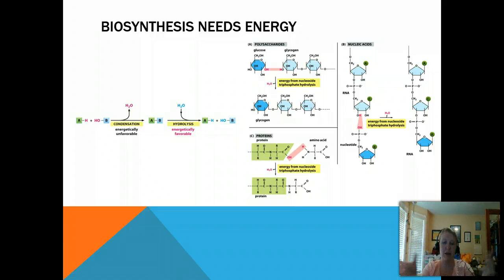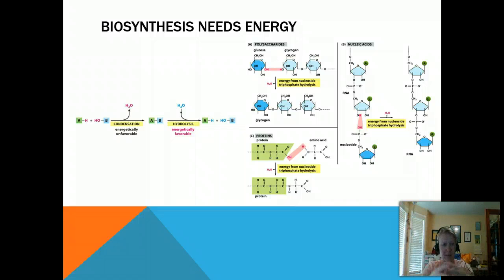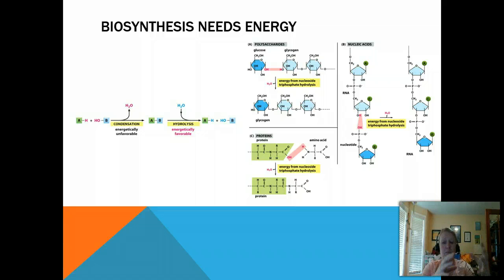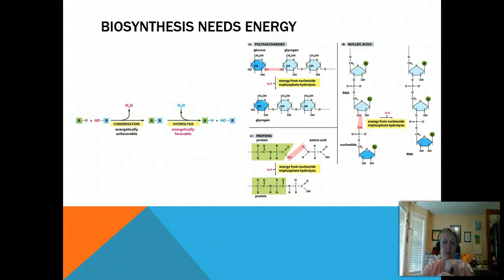Most often we use ATP, sometimes we use GTP which is guanine triphosphate, but for our purposes you can think of them as the same thing. And it helps transform these reactions by removing phosphates from ATP or GTP, transferring them to intermediates and allowing those intermediates to be built through that process.